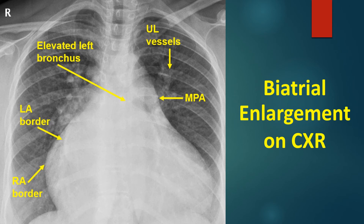A left ventricular type of apex would have been present if there was associated severe mitral regurgitation. Any other cause of long-standing left ventricular inflow obstruction, like left ventricular endomyocardial fibrosis, can also cause a similar picture. Only echocardiography will reveal the final diagnosis. Associated tricuspid regurgitation, secondary to severe pulmonary hypertension, is likely in view of the right atrial enlargement.